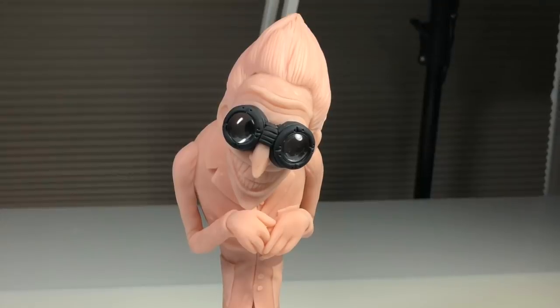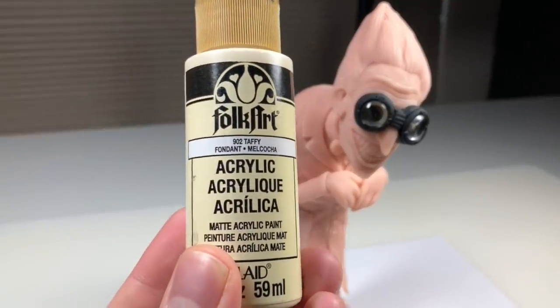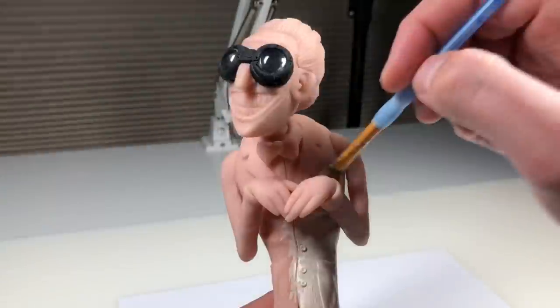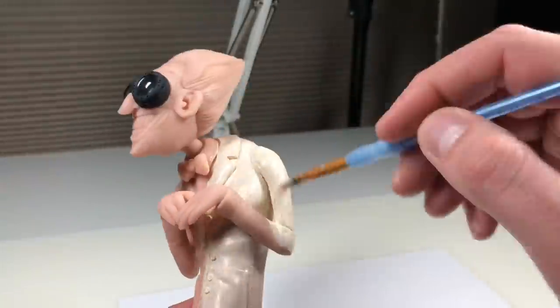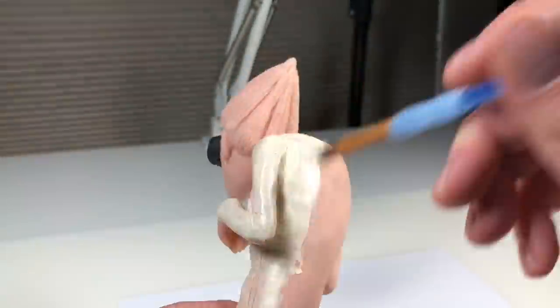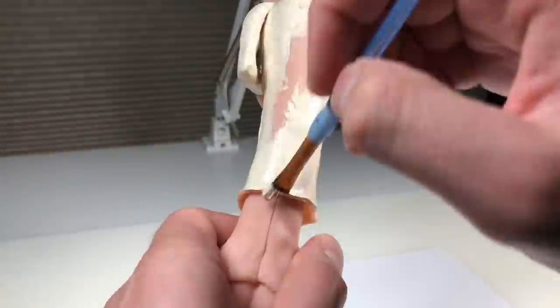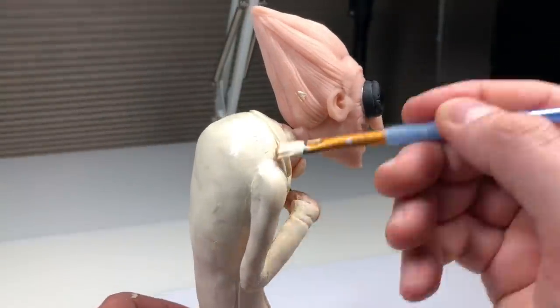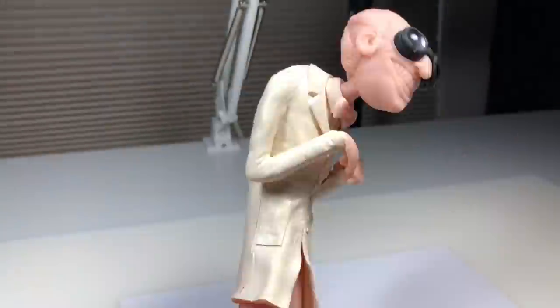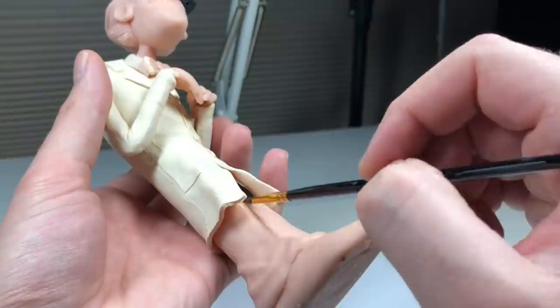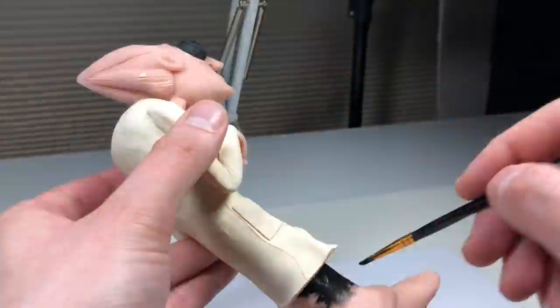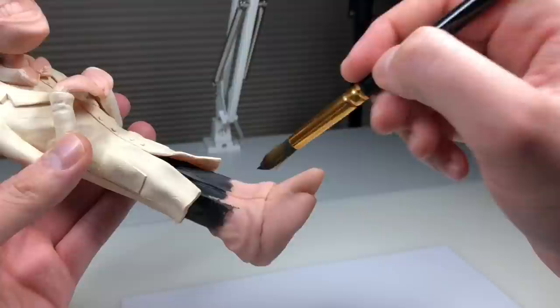And then once he's baked and completely cooled down, it's time to paint. I'm starting with his lab coat using Folk Art Taffy. After a couple coats of taffy, it's time for his pants and shoes. I decided to make these black, so I'm using Folk Art Pure Black.